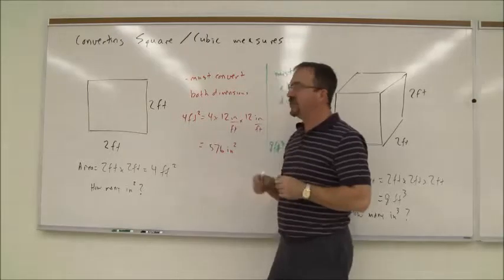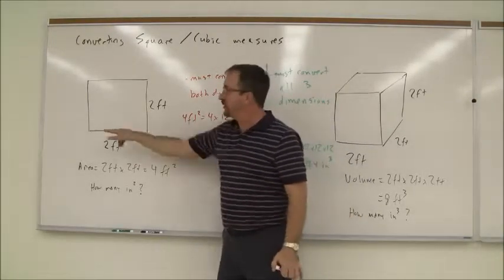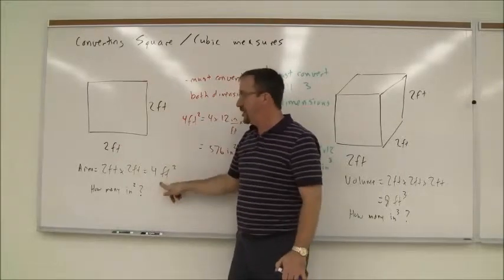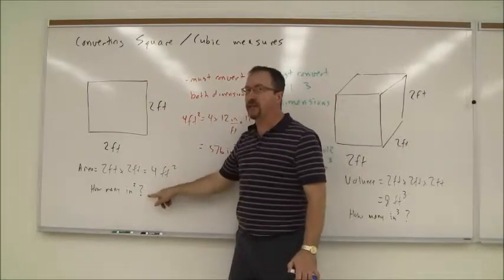So as an example, let's look at these two. This is square measurement, 2 feet by 2 feet. So the area is 2 feet times 2 feet is 4 square feet. We need to know how many square inches that is.